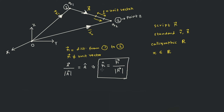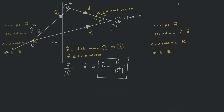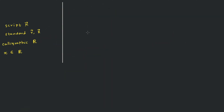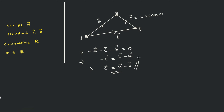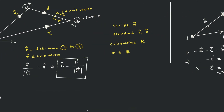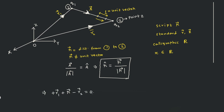We have not yet calculated the script r. So let us calculate it using the triangle law of vector addition. To explain the triangle law, consider a triangle with vectors a, b, c. The vector addition rule on a triangle gives you c vector equals a minus b. Let us apply this idea to the triangle in our problem, and that gives us the expression for script r.